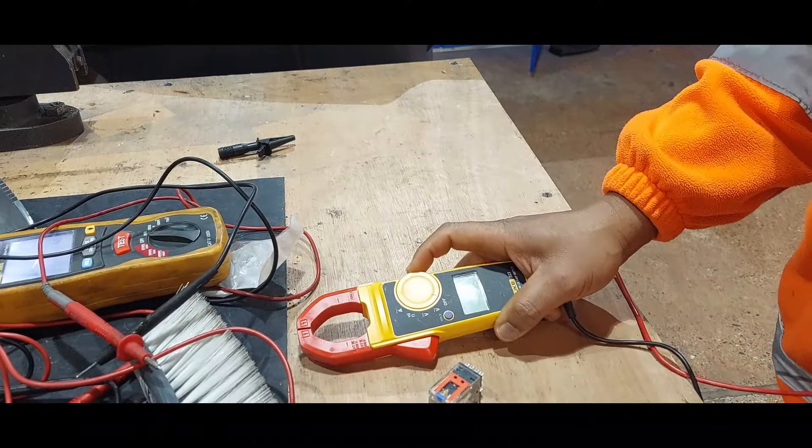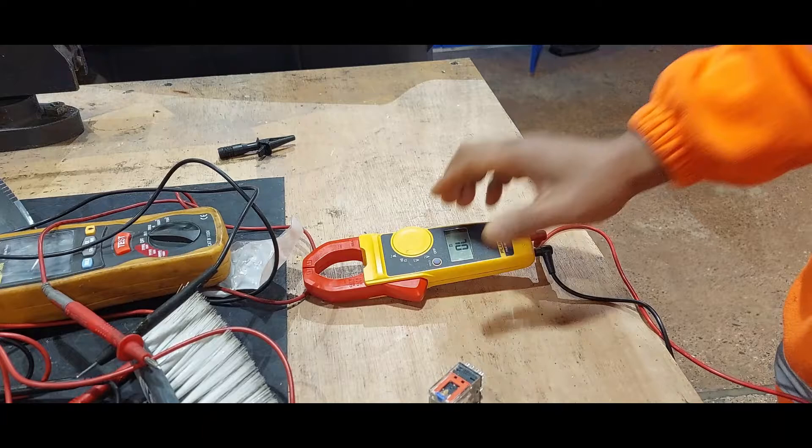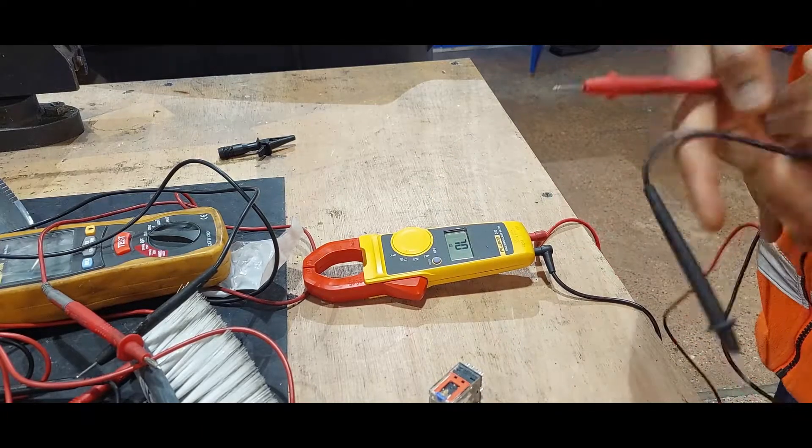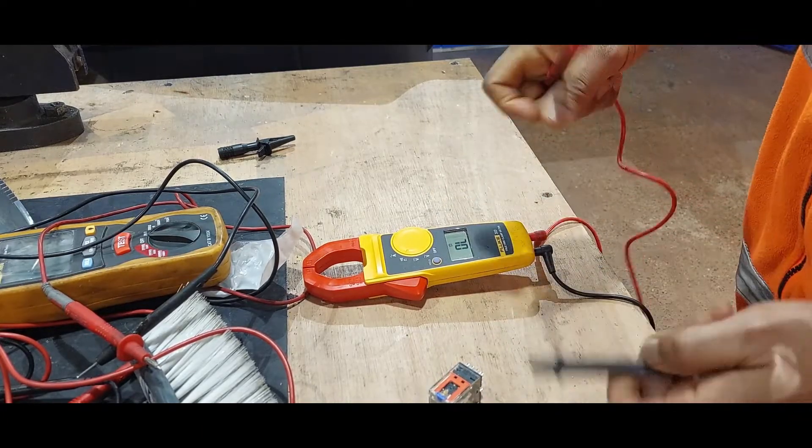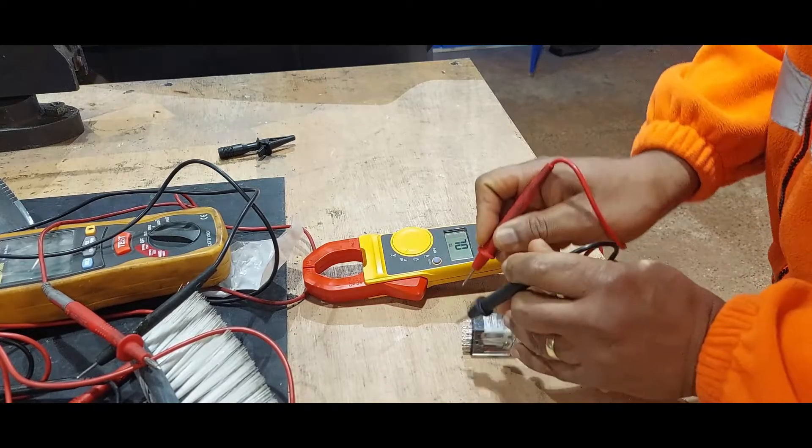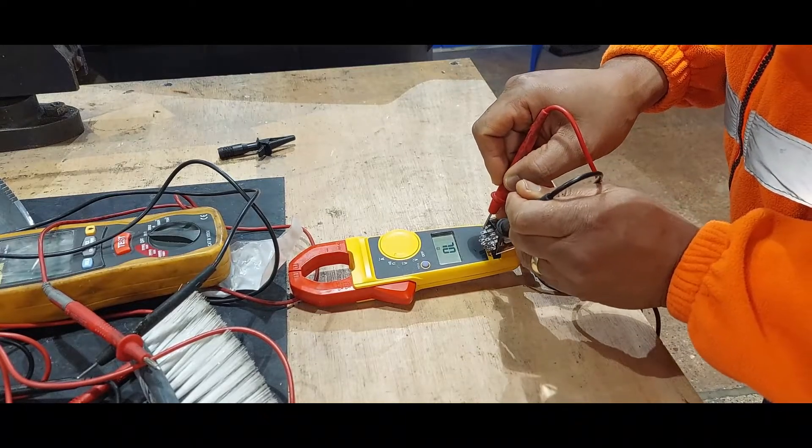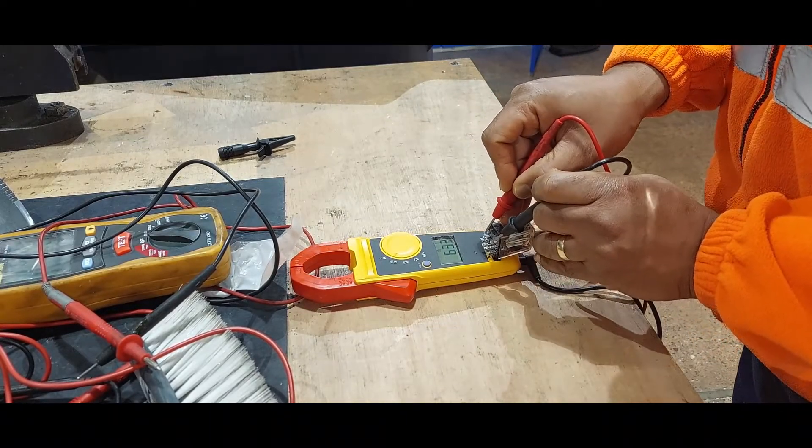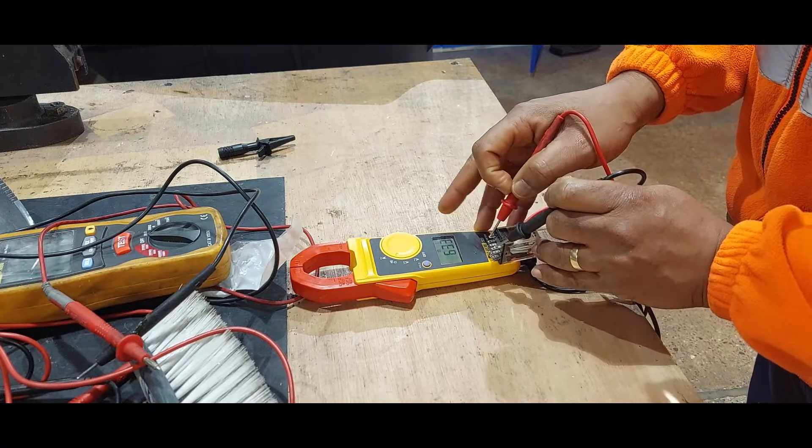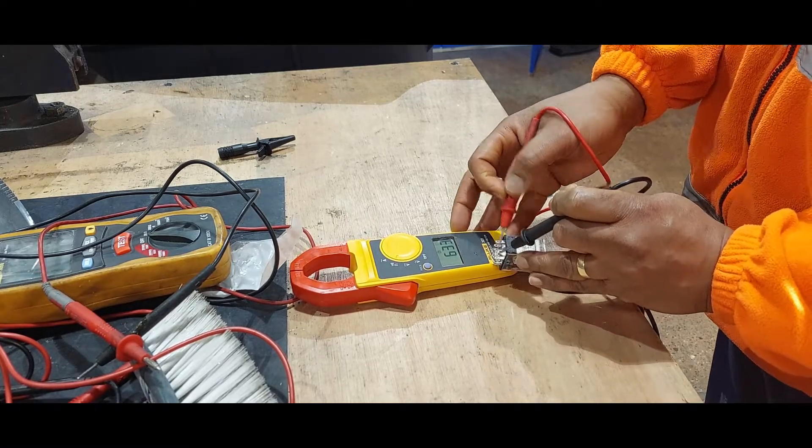But if we put this one, we put it on ohm meter and then on the same 13 and 14. Yeah, we see there's a reading. It's reading 633 ohms. So that is because this is still good.